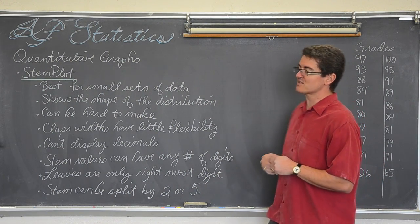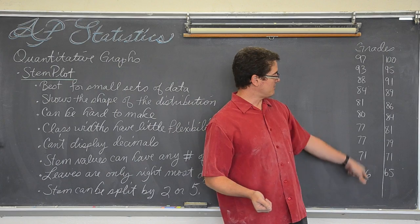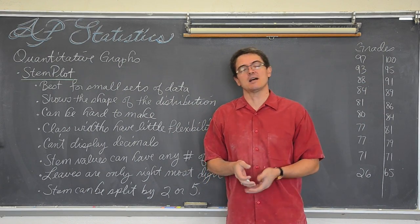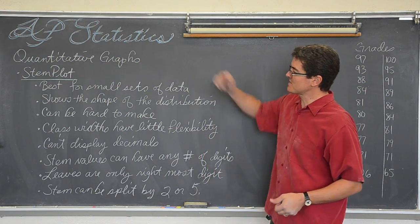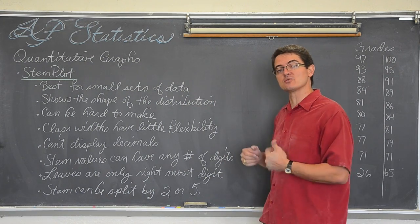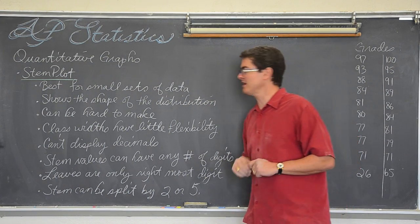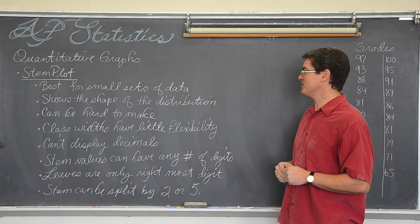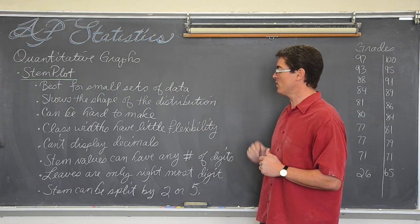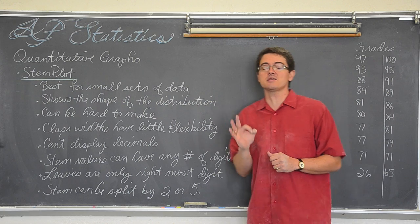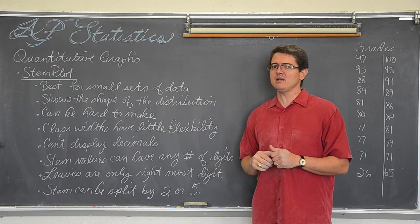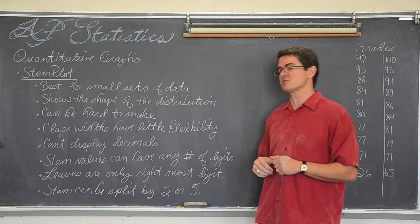Here is the deal with stem plots. We are going to go back to our grades — our make-believe grades for our two class sections and analyze them together. Stem plots are best used for small sets of data. We have that; there are only ten people in the class, supposedly. We can show the shape of the distribution with a stem plot, and they also allow us to see the actual data within that distribution, which is a big plus. They can be hard to make.